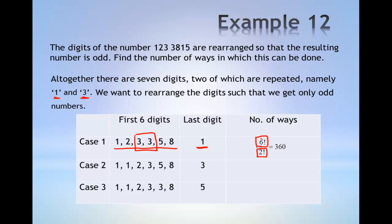In the second case, the last digit is 3. The number of ways to arrange the 7 digits with the last digit being 3 is given by 6 factorial, divided by 2 factorial, due to the fact that there are 2 digits of 1.